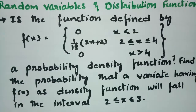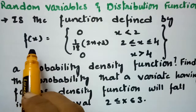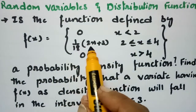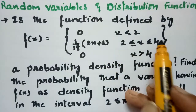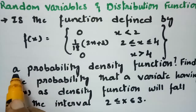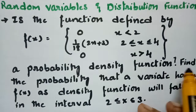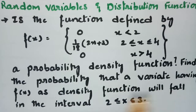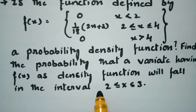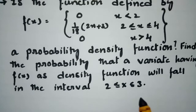This problem is from random variables and distribution functions. The function f(x) is defined as: 0 when x is less than 2; (1/18)(2x + 3) when x lies between 2 and 4; and 0 when x is greater than 4. We need to show that f(x) is a probability density function, and find the probability that a variate with f(x) as its density function falls in the interval 2 ≤ x ≤ 3.